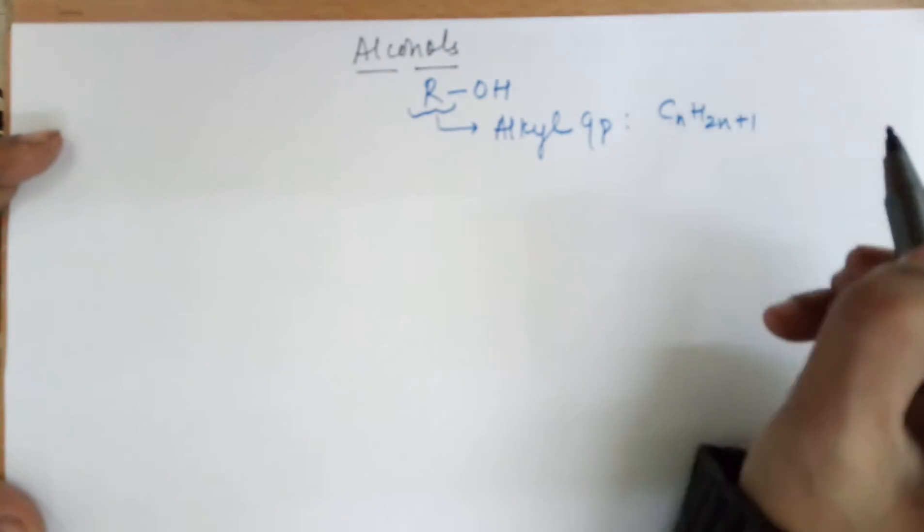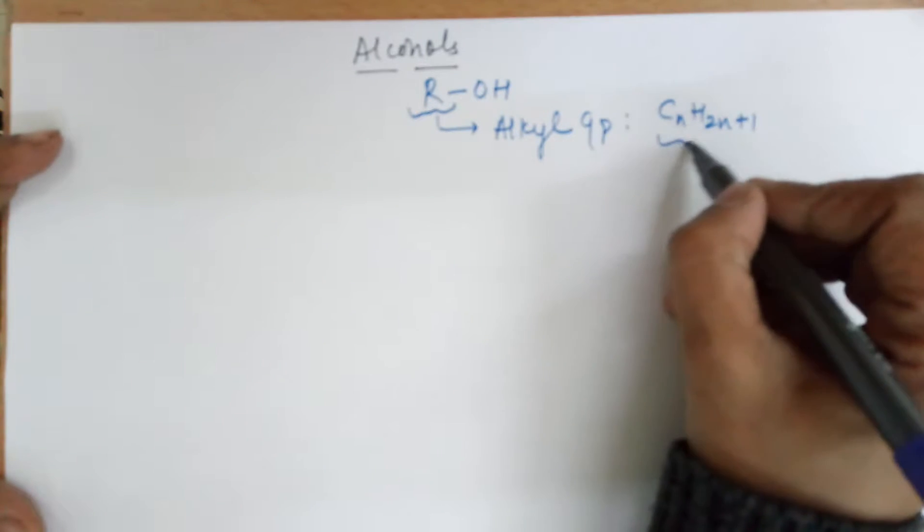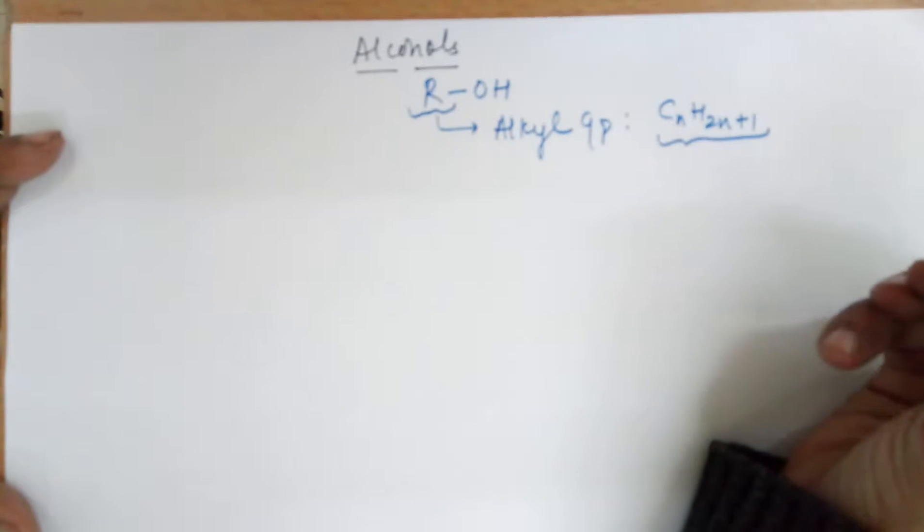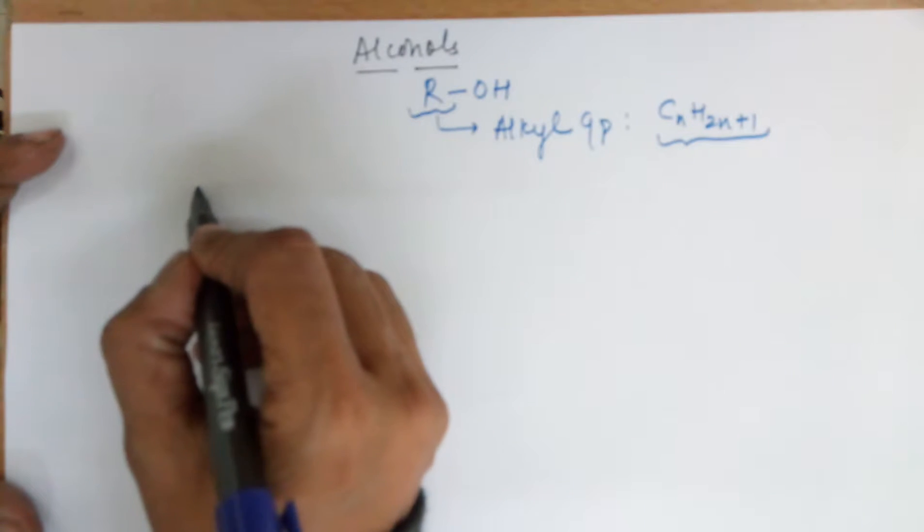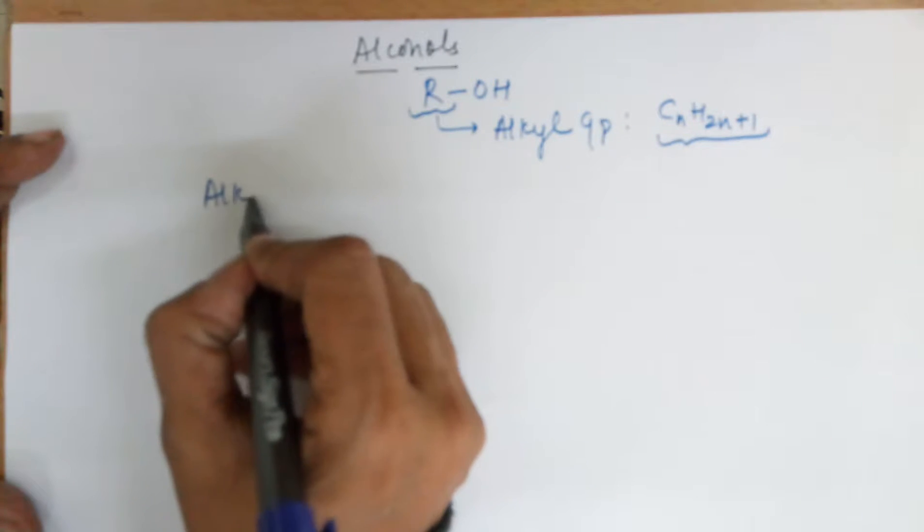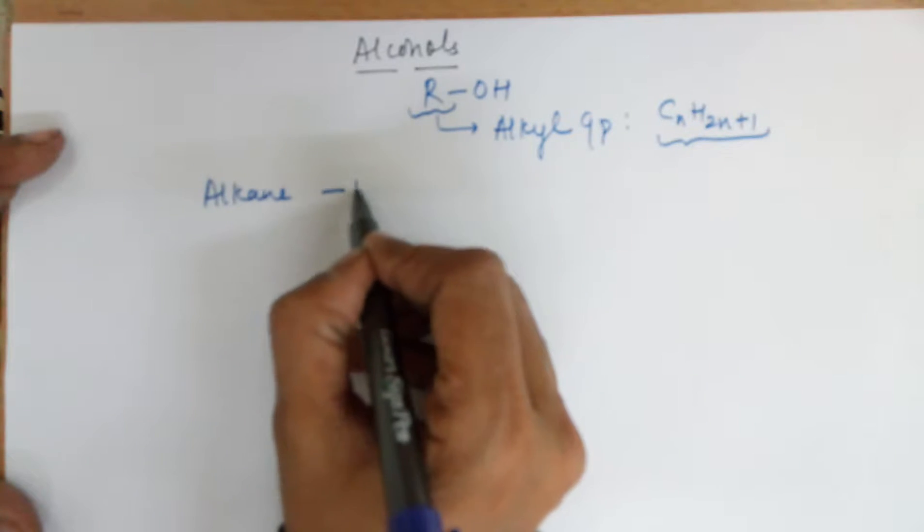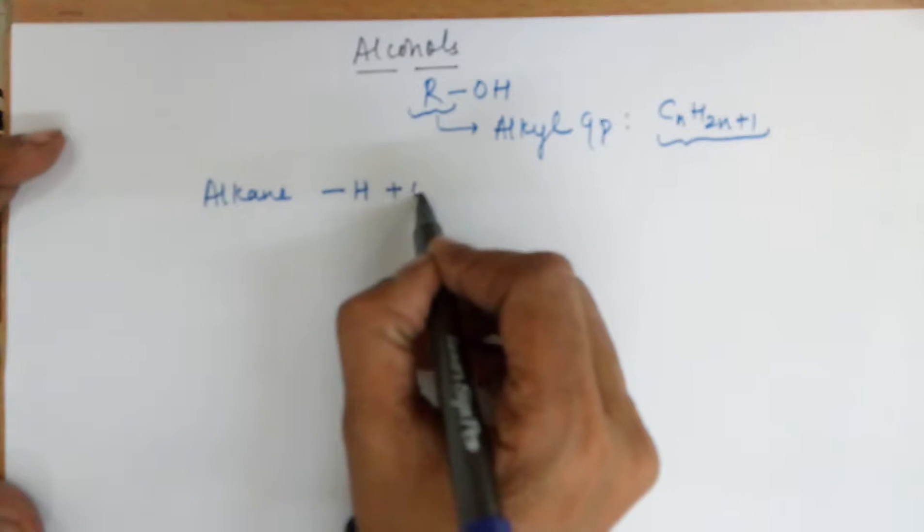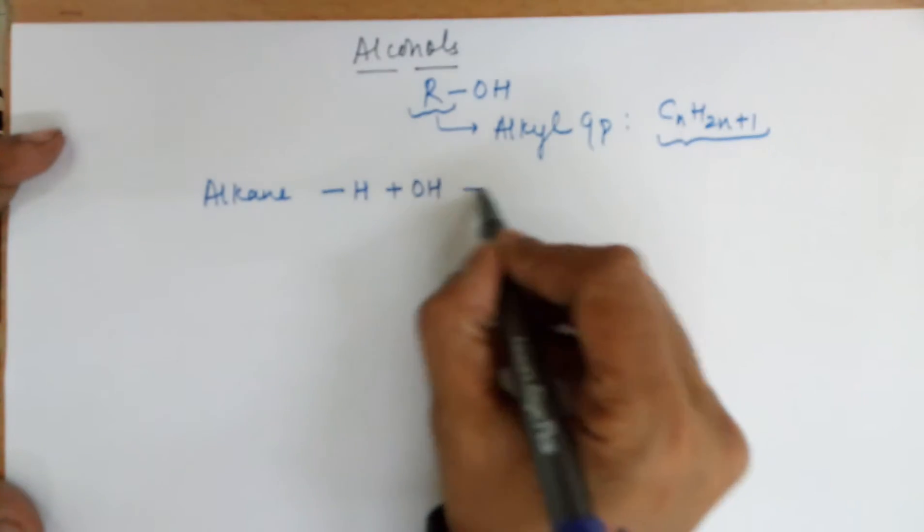CnH2n+1 is the general formula for an alkyl group. Another way of understanding this could be that you take an alkane, remove an H from it, and add OH in its place. You end up with an alcohol.